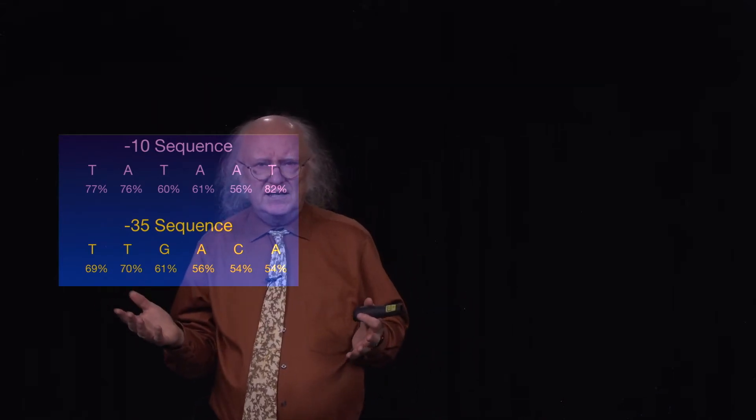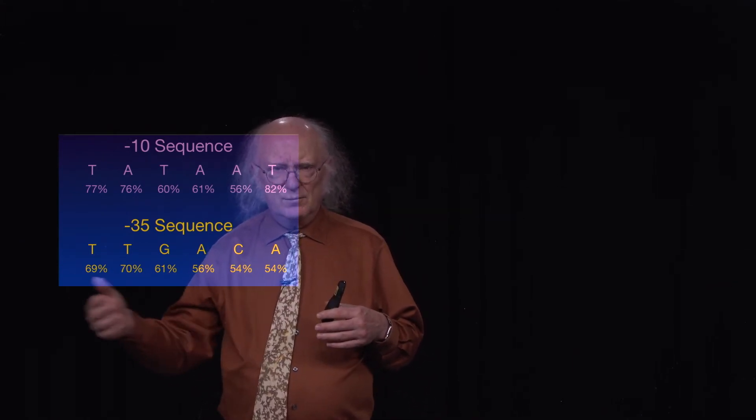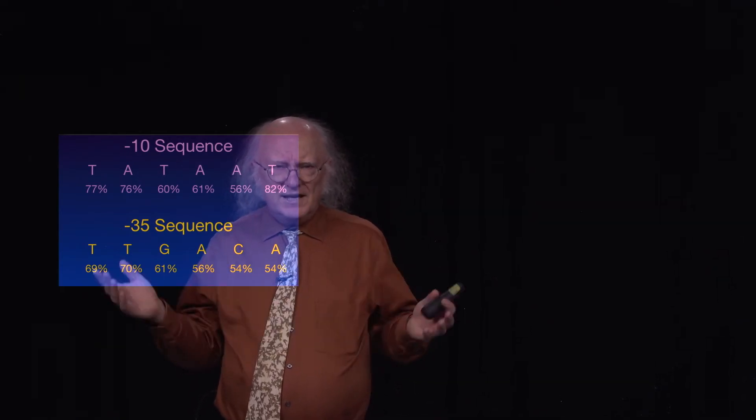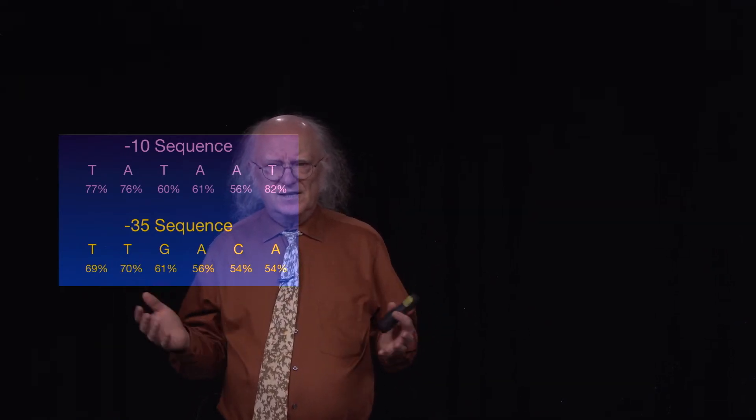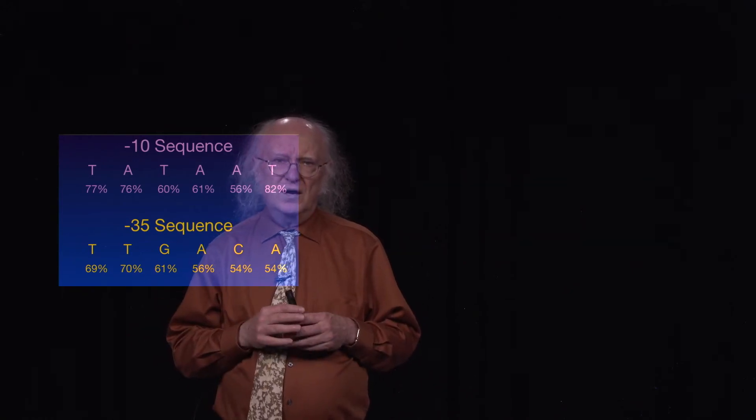Below it you can see another consensus sequence known as a minus 35 sequence, and you see it's not rich in ATs, but it does have some consensus within there — meaning that on average it's more common to find some of these nucleotides than other ones there. What does a consensus sequence mean, and why is it relevant for transcription?